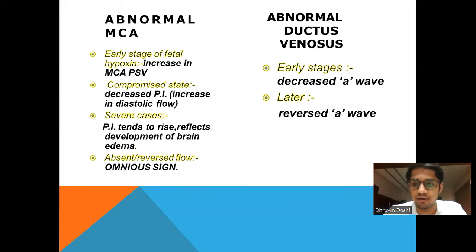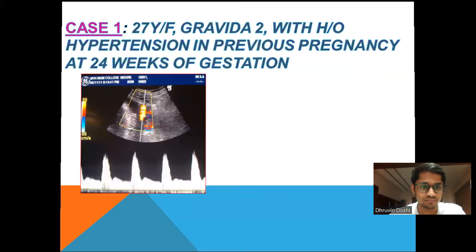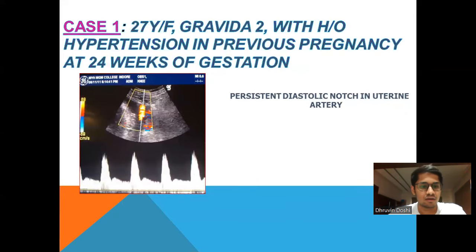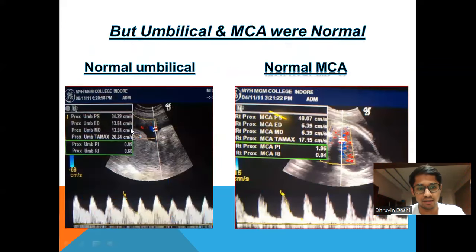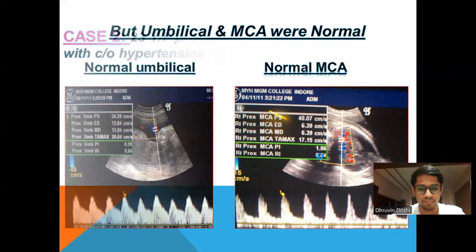The first case is a 27-year-old female, Gravida 2, with history of hypertension in previous pregnancy, at 24 weeks of gestation. We can see there is a persistent diastolic notch in the uterine artery, but umbilical and MCA are normal — normal umbilical PI, RI, and normal MCA.